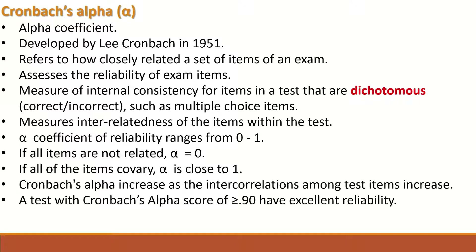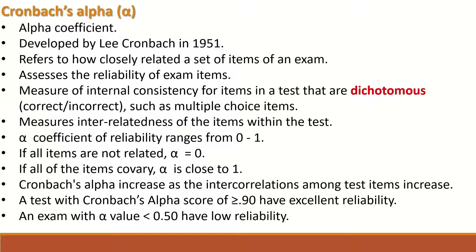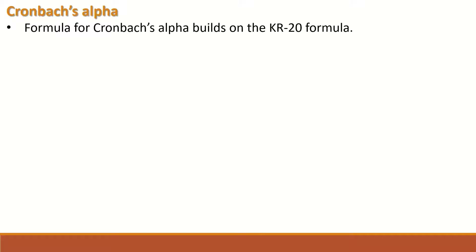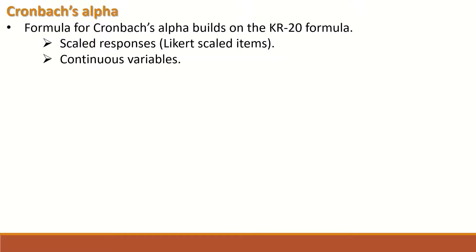A test with a Cronbach's alpha score of 0.9 or greater has excellent reliability, and a test with an alpha value less than 0.5 will have low reliability. Cronbach's alpha formula was established based on the KR20 formula and can be used to analyze scaled responses such as Likert scale items, continuous variables, and binary variables such as multiple choice questions.